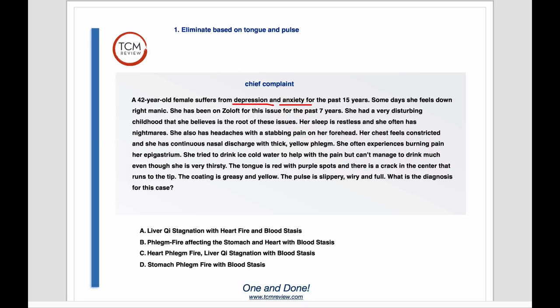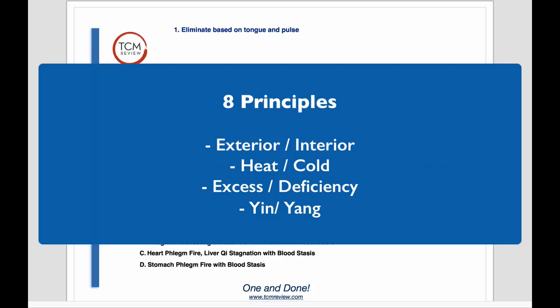First, eliminate based on tongue and pulse. When the tongue and pulse are given in a case study, that is the fastest, easiest way to start eliminating incorrect answers. For this tongue, we see that it's red with purple spots. There's a crack in the center that runs to the tip. The coating is greasy and yellow. The pulse is slippery, wiry, and full. We're going to take these qualities and break them down into eight principles.